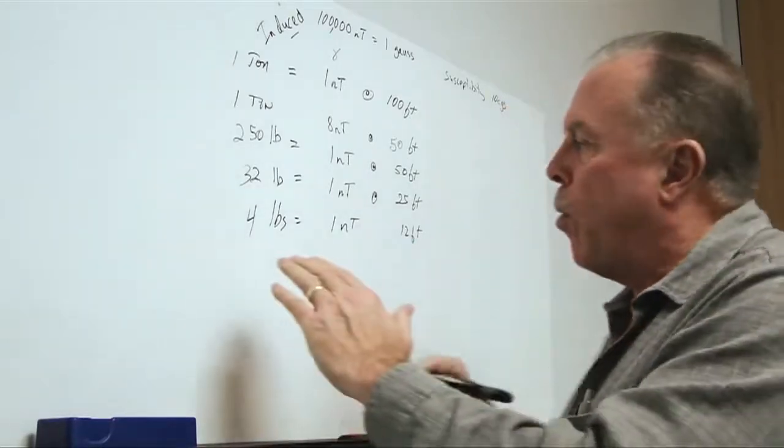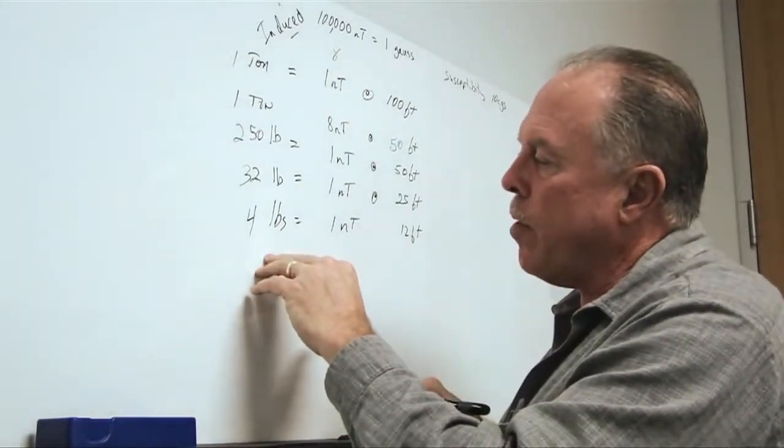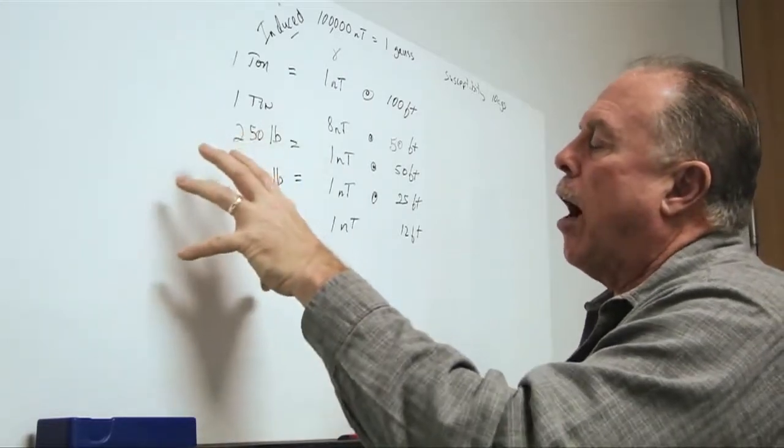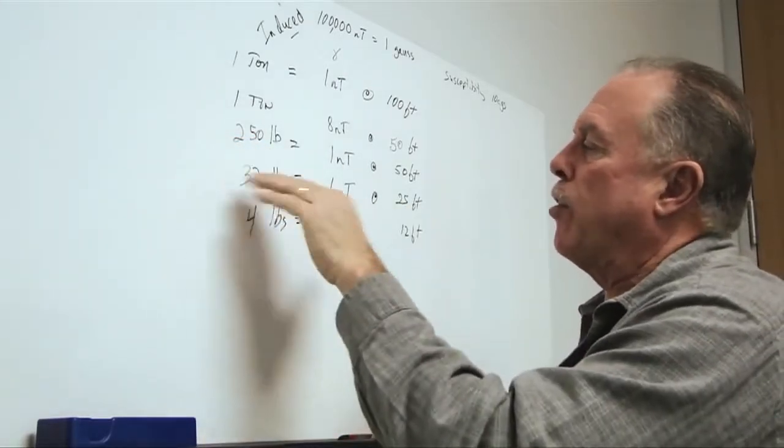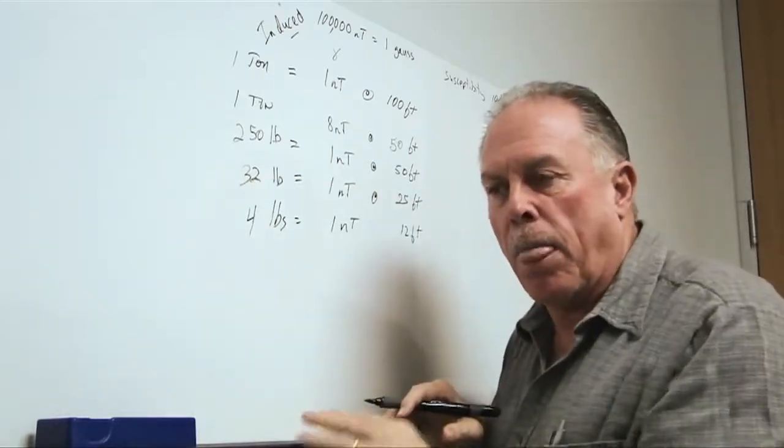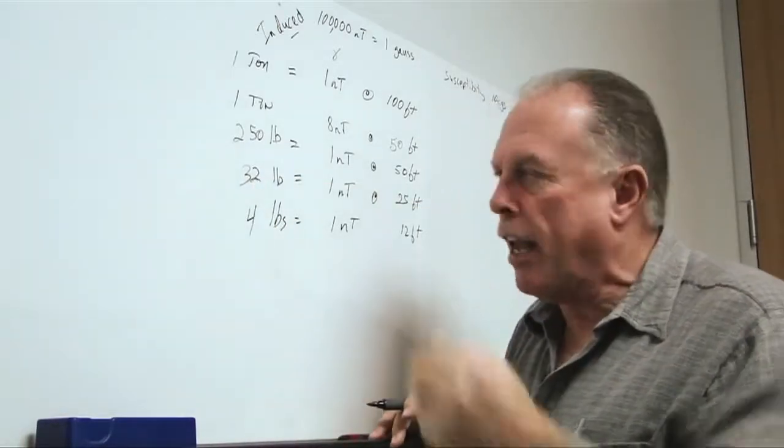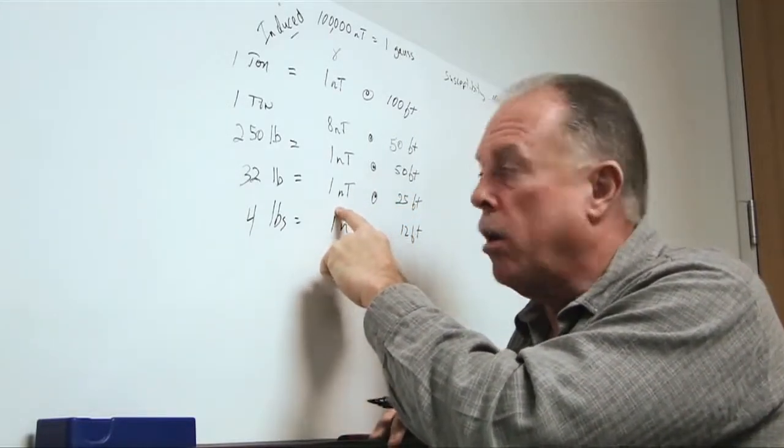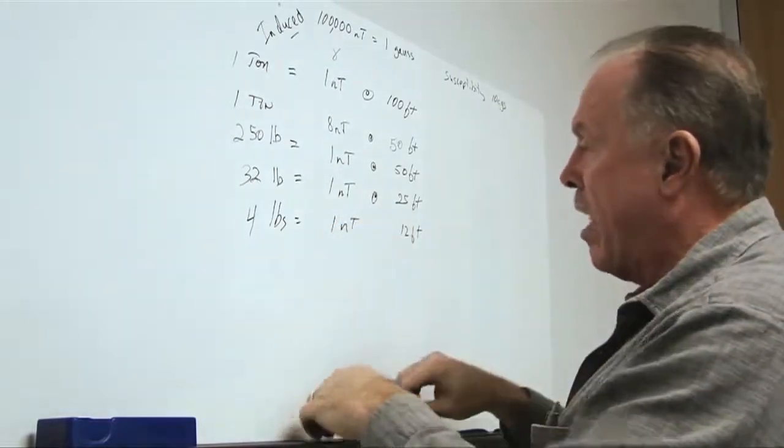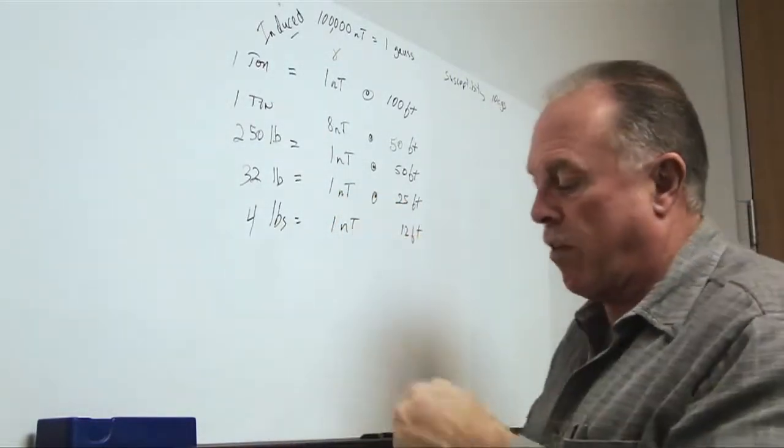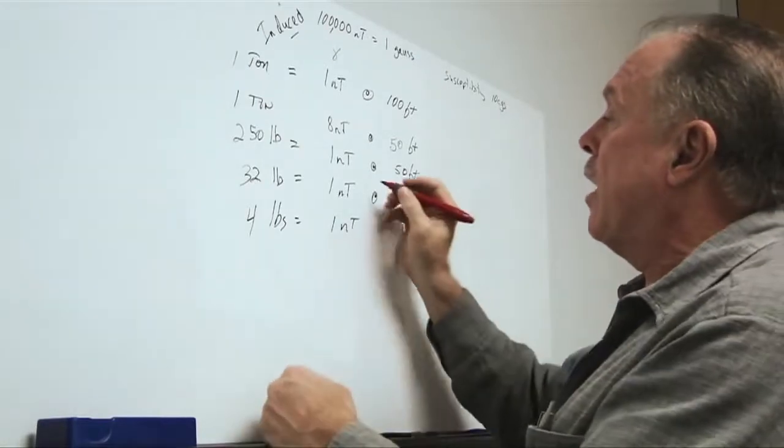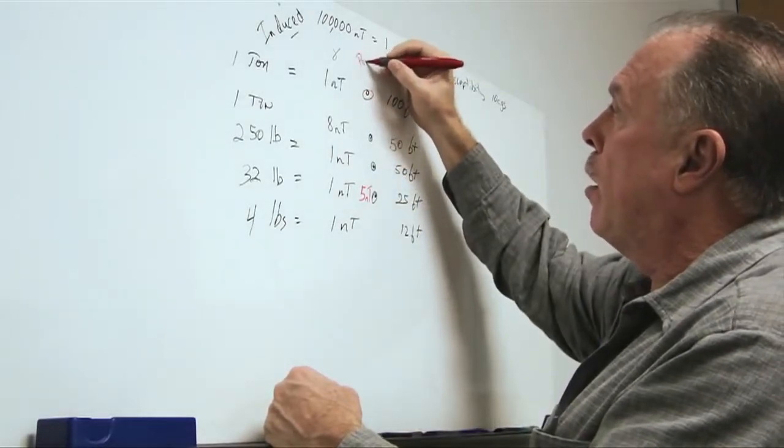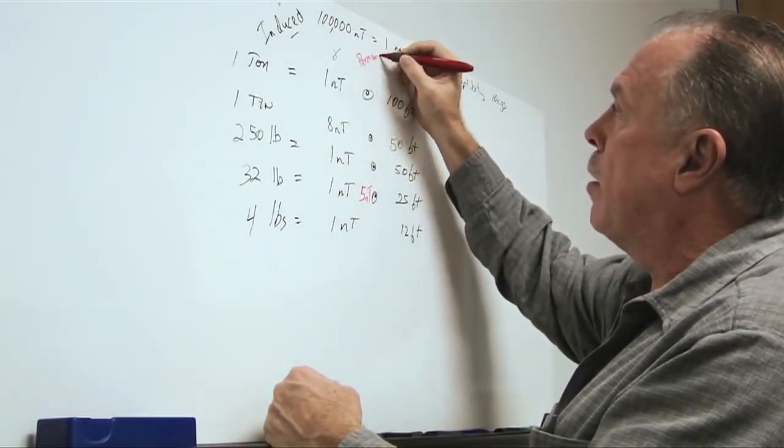So, the point I want to make here is that induced fields give us the ability to see objects perhaps at, let's say, 30 pounds at 25 feet. But, the permanent fields can amplify this response by a factor of 3 to 5 or more. So, instead of having a 1 nanotesla anomaly of 32 pounds at 25 feet, we might easily get a 5 nanotesla when we include permanent field.